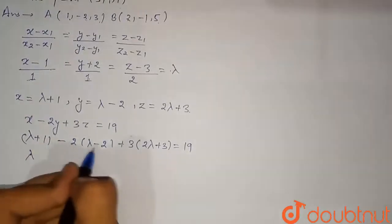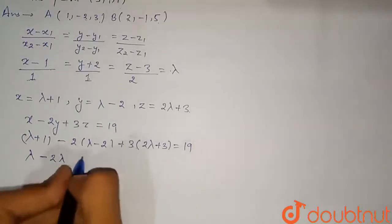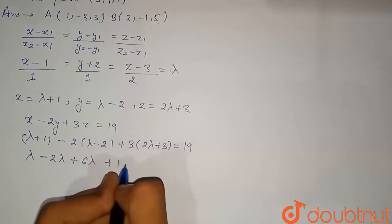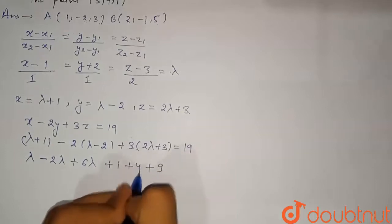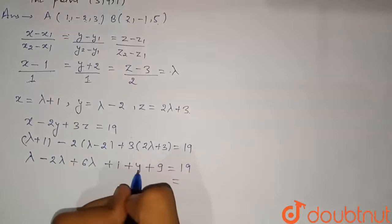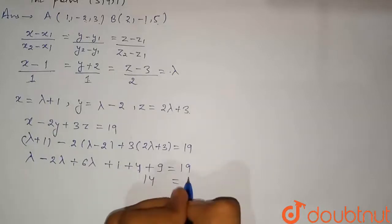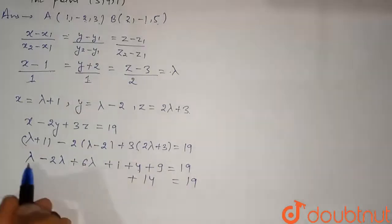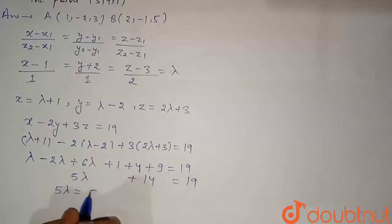Expanding: λ + 1 - 2λ + 4 + 6λ + 9 = 19. Collecting lambda terms: (1 - 2 + 6)λ = 5λ, and constants: 1 + 4 + 9 = 14. So 5λ + 14 = 19, giving 5λ = 5, therefore λ = 1.